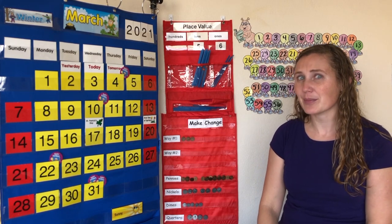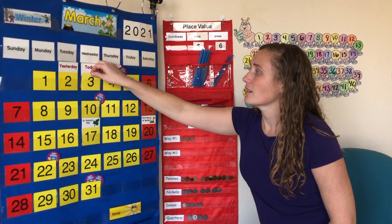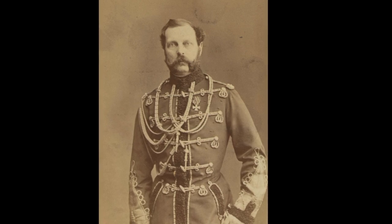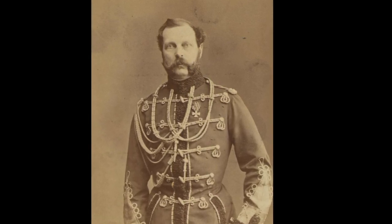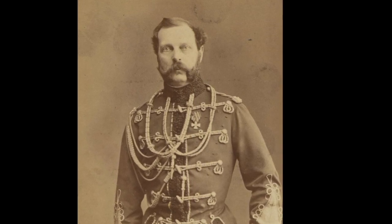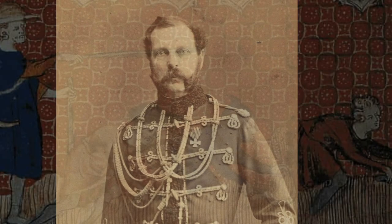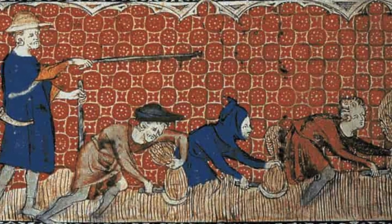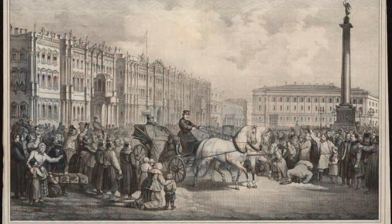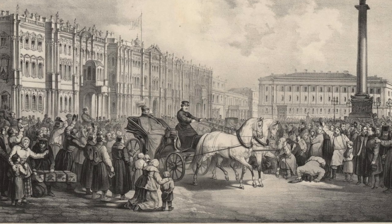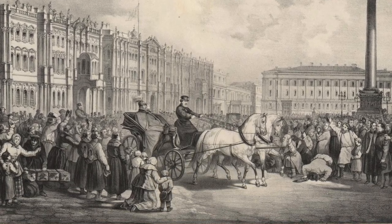Let's see what happened today in history. This is Alexander the Second. On March 3rd, 1861, Alexander the Second of Russia signed the Emancipation Manifesto, freeing all serfs and giving them the full rights as citizens. Serfs were people who worked for the rich but were not paid. The emancipation gave them the freedom to do many things, like own property, run a business, and earn money. Emancipation means being set free.